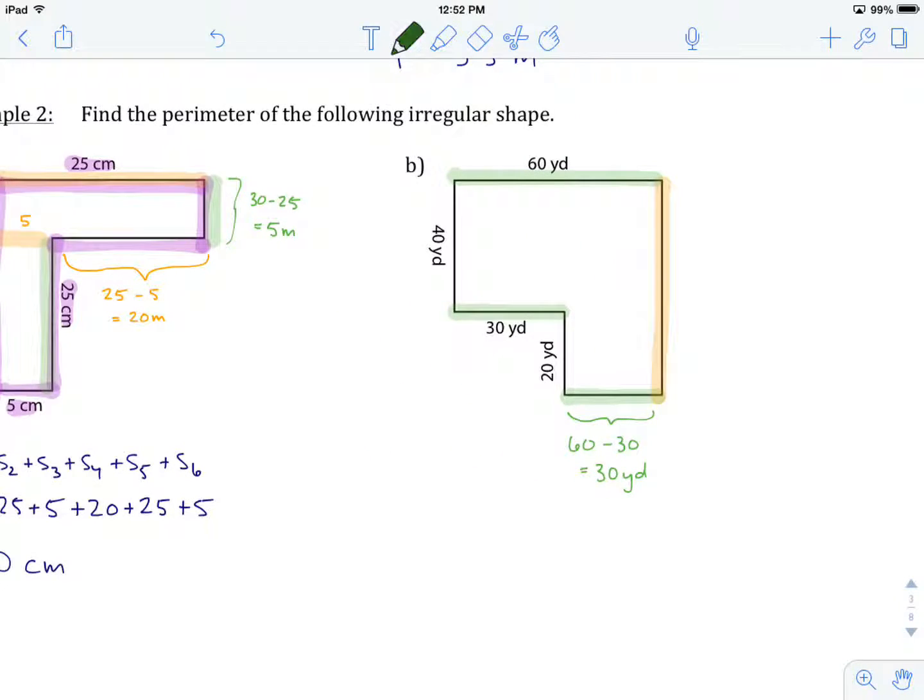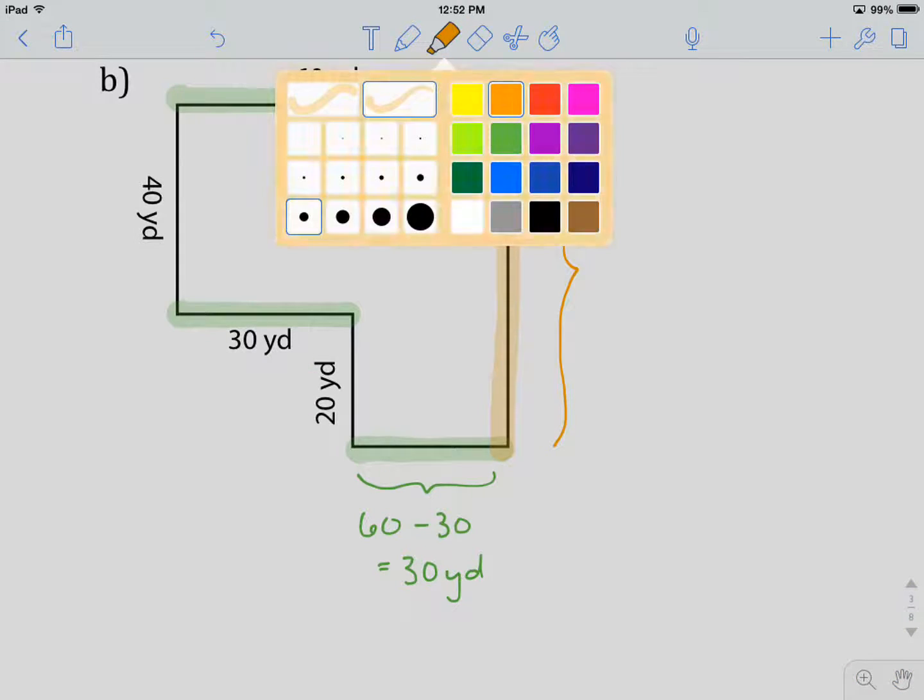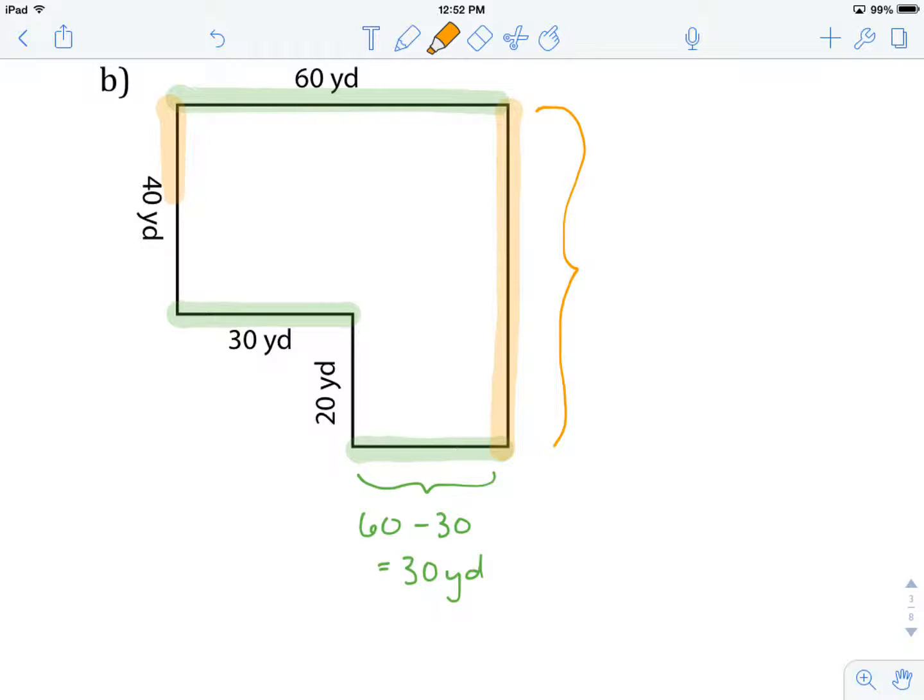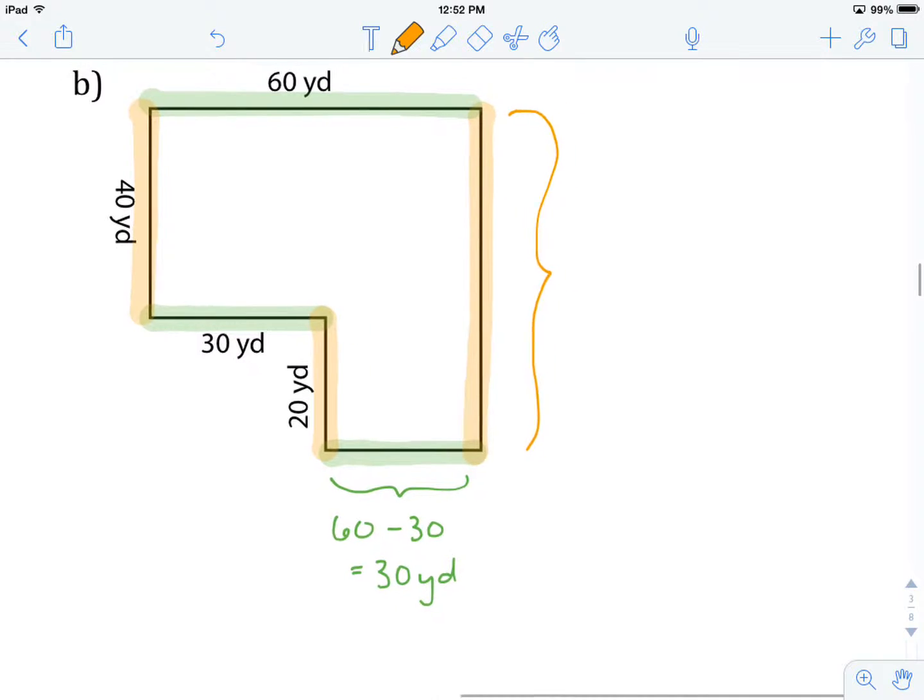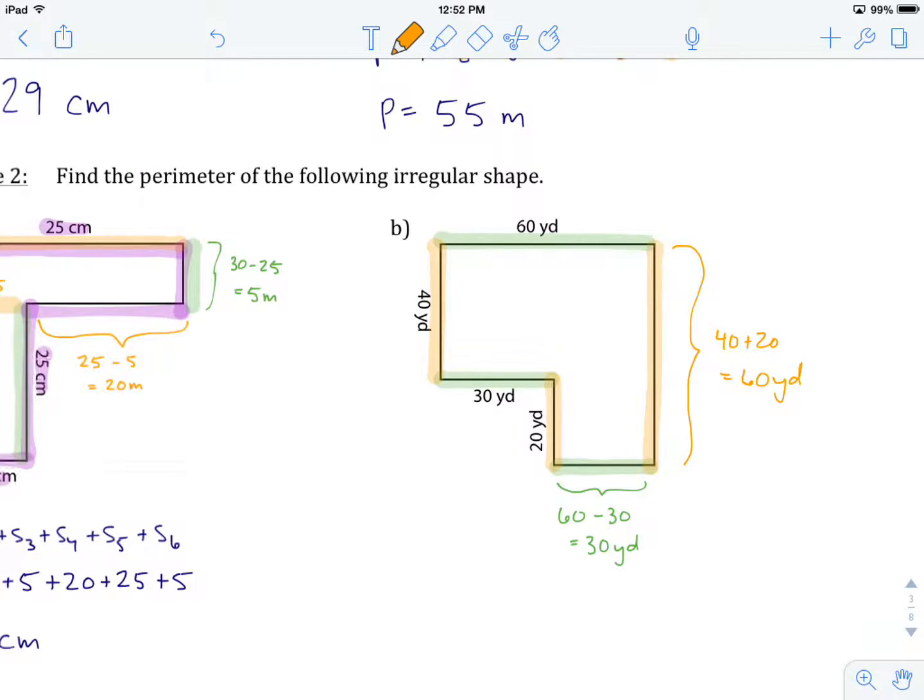Let's look at the orange side. Now the orange side is actually a total. It's actually the whole length. But we don't know how much that is. I know that there are a couple of pieces that I know. I know that from the top down to here is 40. And from that point where it stops down to the bottom is 20. So if I take 40 plus 20, that will give me this side length, which is going to be 60 yards. So now I have found those two values that I'm missing.